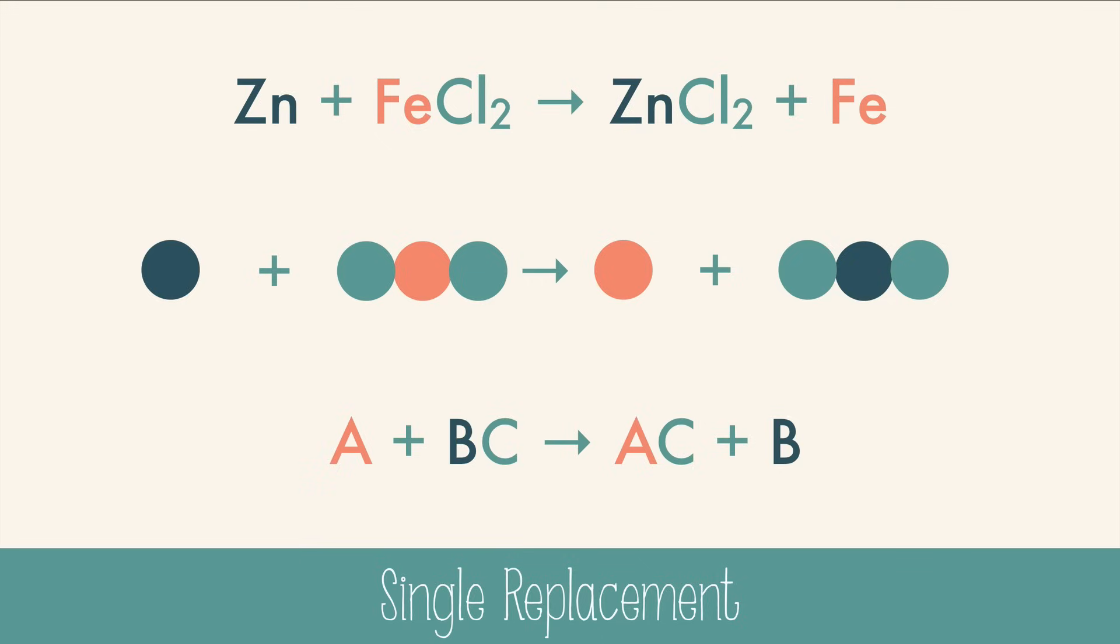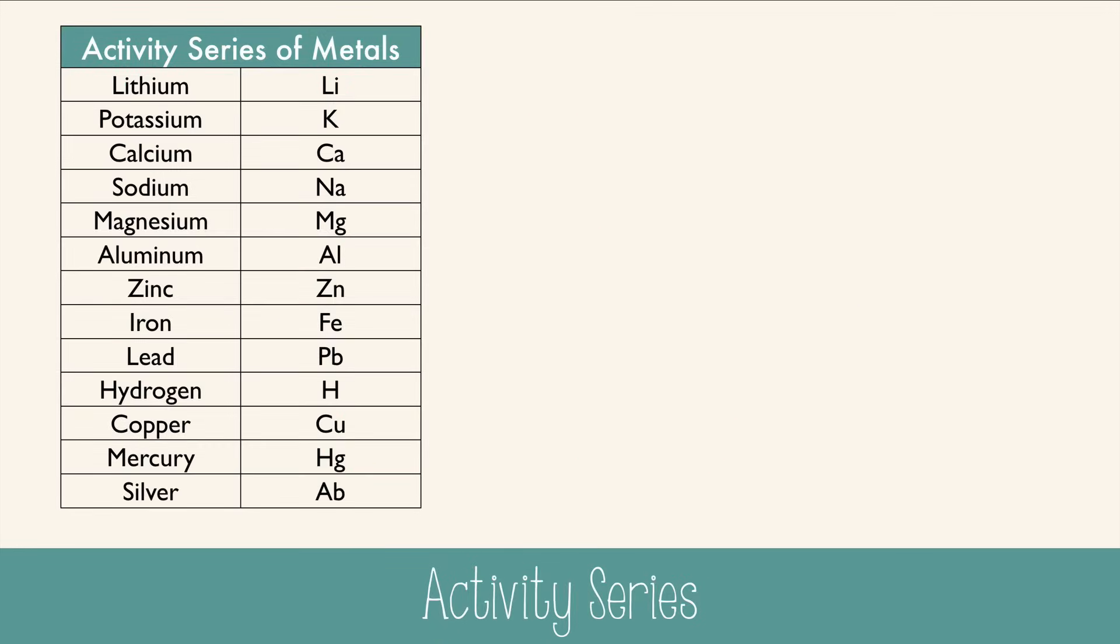But not all single replacement scenarios actually work. In order to see if the swap will occur, we need to reference a chart, the activity series of metals. The more active metals are toward the top, and metals decrease in their activity as you move to the bottom. In the previous reaction, zinc was the individual element, and it was higher than iron on the activity series. So this reaction occurred.